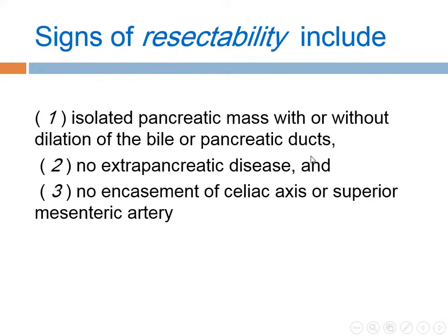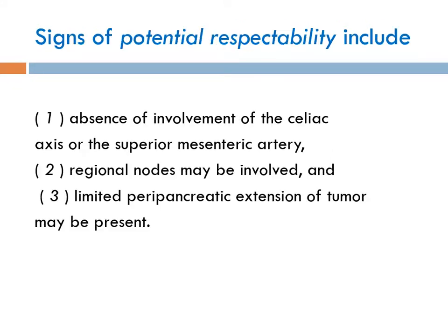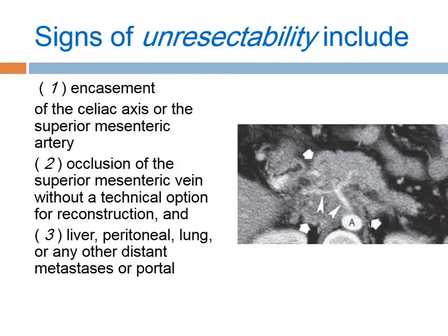Signs of resectability include an isolated pancreatic mass with or without dilatation of bile or pancreatic duct, no extrapancreatic disease, and no encasement of vessels. Potential resectability includes absence of vessel involvement, and regional lymph nodes may be involved with limited peripancreatic extension. Signs of unresectability include encasement of the celiac and superior mesenteric artery, occlusion of the superior mesenteric vein without technical option for reconstruction, and metastasis to liver, lung, and peritoneum.